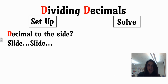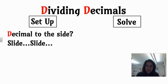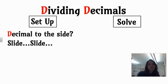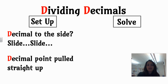When it comes to the setup, there's something called — I call it — decimal to the side, slide, slide. As fifth graders, you don't really come across problems where there's a decimal to the side; that's more of a sixth grade thing, but for those that are ready for it in fifth grade, I'll introduce it. And then the other thing with the setup is simple: the decimal point simply gets pulled straight up.